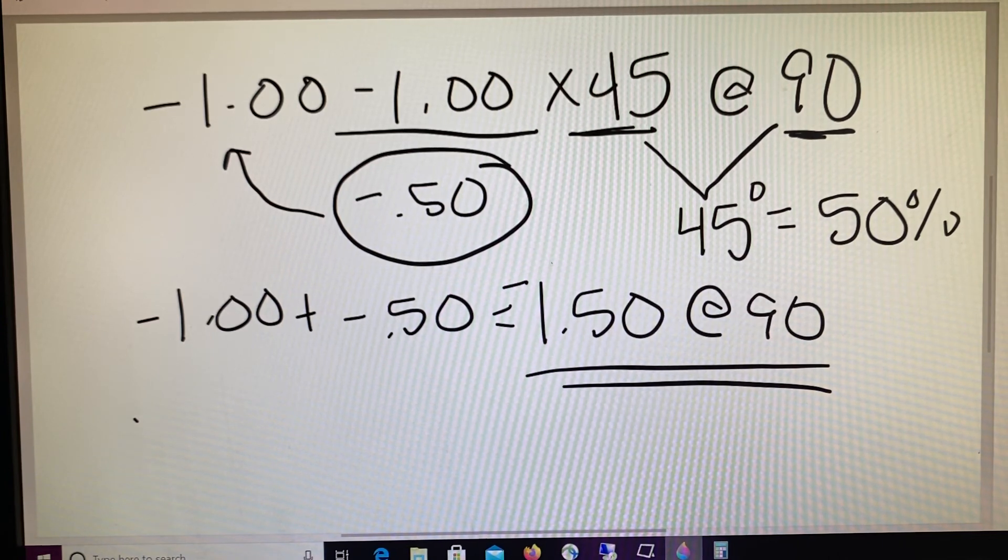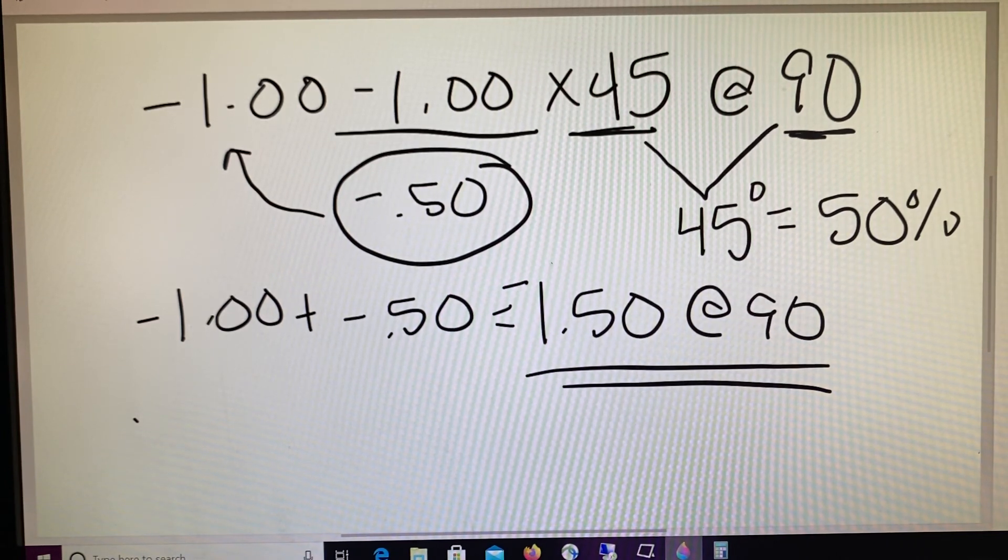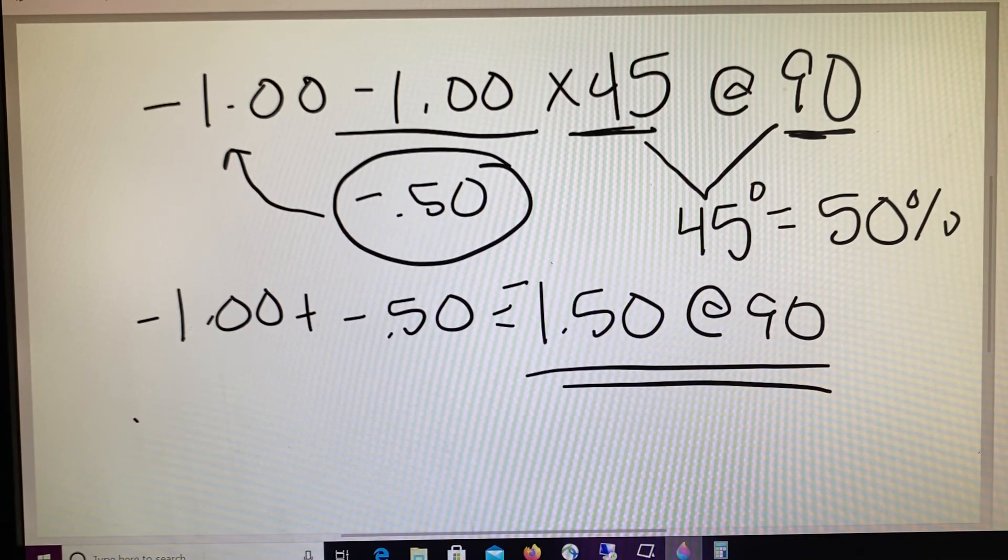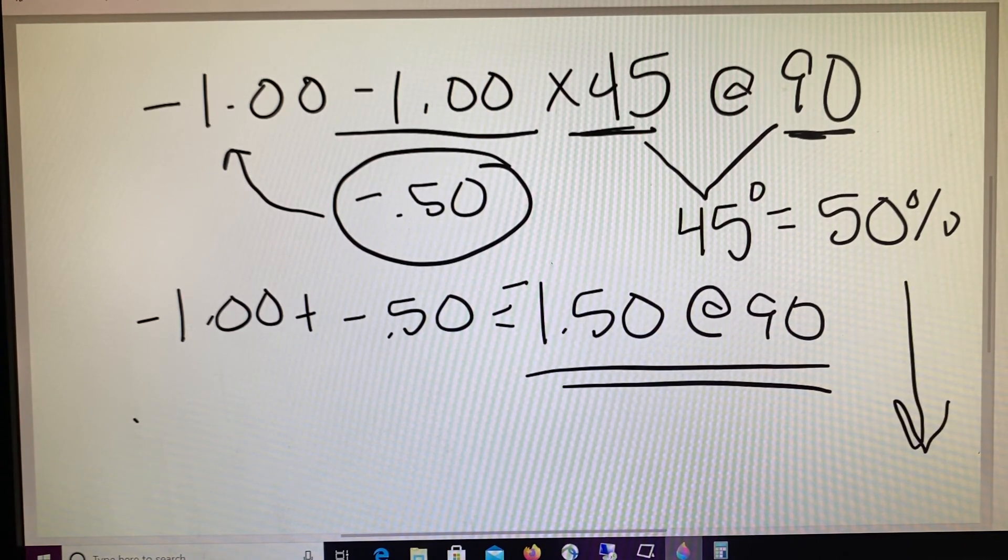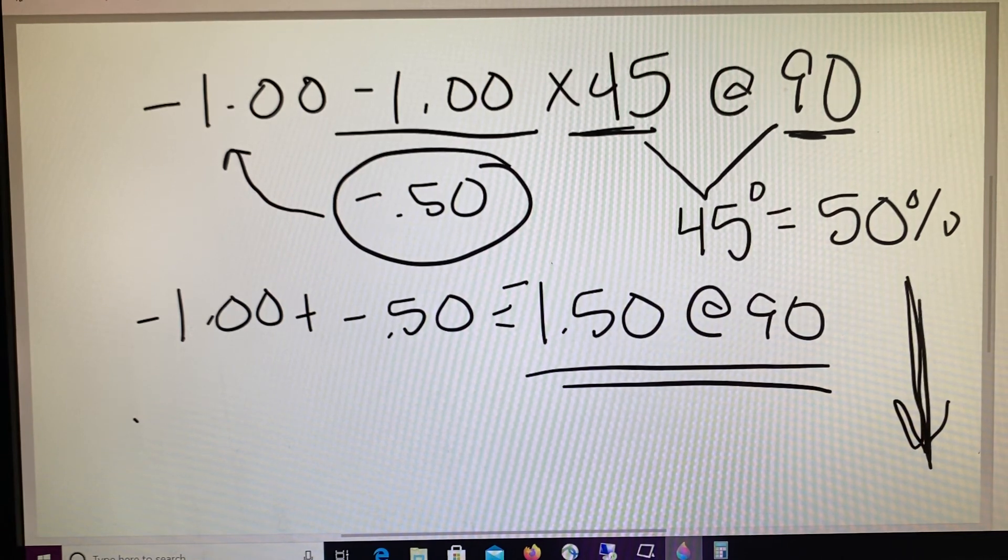So we would say that the power at axis 90 is minus 150. And this would be important, again, in a question pertaining to maybe vertical imbalance, so that we could understand what the power is vertically in the lens. So as the patient looks down into the bifocal, we need to know what it is on that vertical axis.